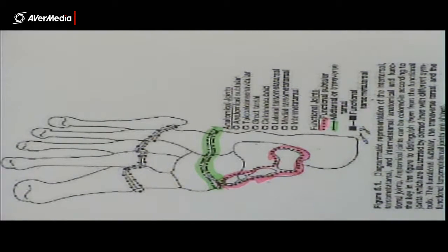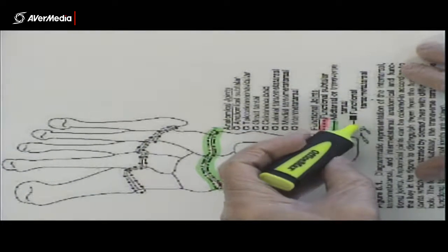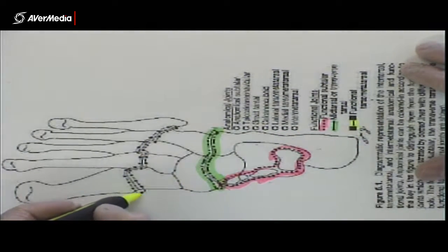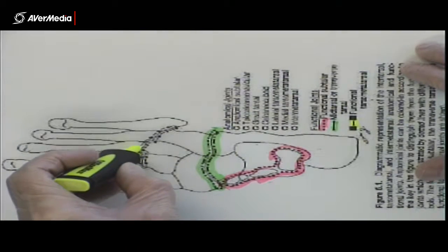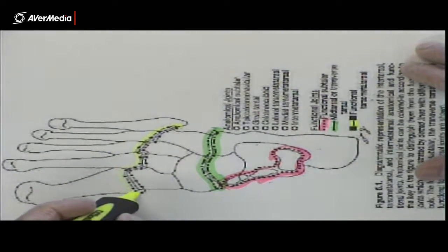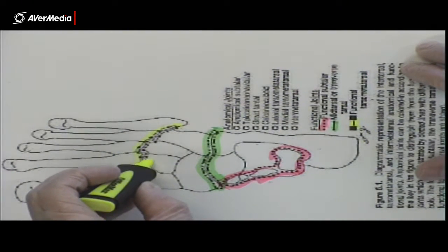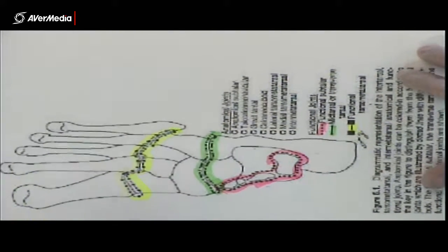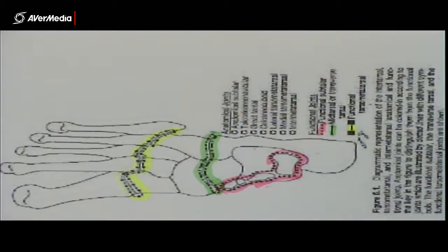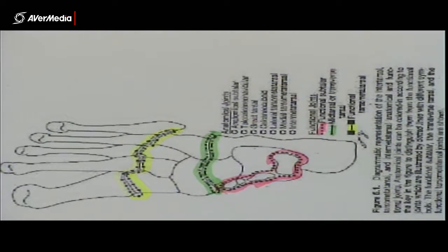Then we have our third functional joint, which is the functional tarsometatarsal joint. And that's this one here between the tarsals and metatarsals. And again, it's made up of several different anatomical joints.